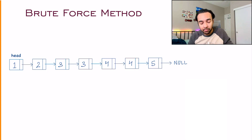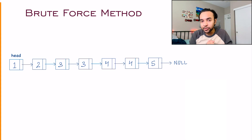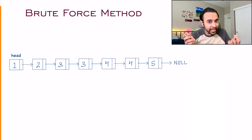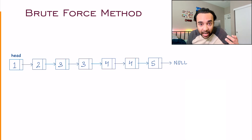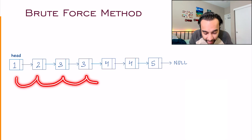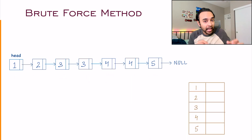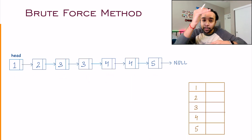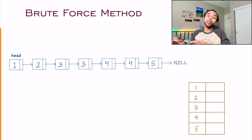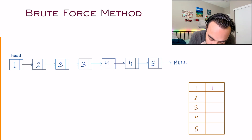When you start to think about a solution and you see this list in front of you, the first thing that comes to mind is you have to find out all the duplicates. So it makes sense to count all of the elements. You will start from the head and then iterate over each element, and you can maintain a map that stores how many times each digit is occurring. You see that one occurs one time, two occurs one time, three occurs two times, four occurs two times, and five occurs one time.